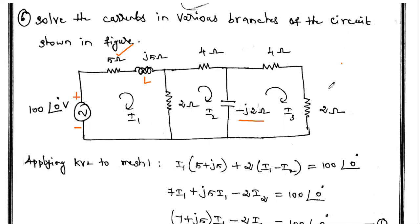Now we are going to solve this AC circuit using mesh analysis. The procedure remains the same as for a DC circuit mesh analysis — the same steps are followed here. The first step is to identify the meshes. A mesh is a closed path that does not have any internal closed path.